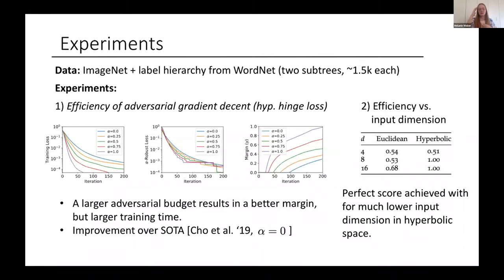There's a prior work on empirical, so it doesn't give any theoretical guarantees, but it defines hyperbolic equivalent of support vector machines in hyperbolic space, which would correspond to our approach with the adversarial budget of zero. And those are the curves shown in blue here. So we significantly improve over those.